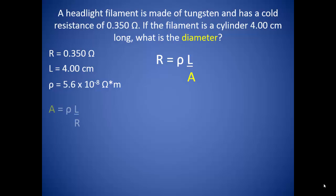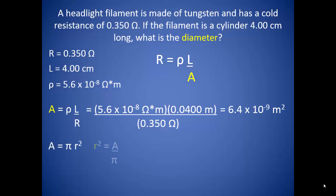So we can solve for the area, and since the wire is a cylinder, we know we can find the area by taking π times the radius squared. Solving for the radius squared and then the square rooting it gives us 4.51 times 10 to the negative 5 meters. And we know that diameter is two times the radius, so we get 9.0 times 10 to the negative 5 meters.